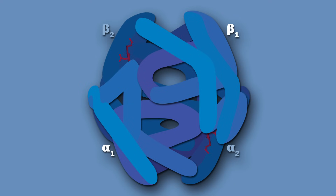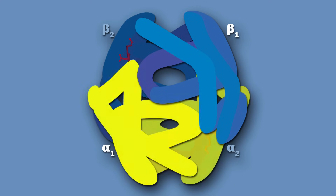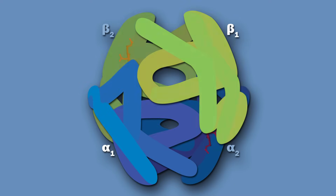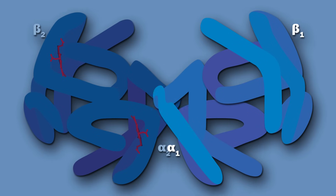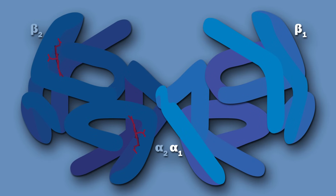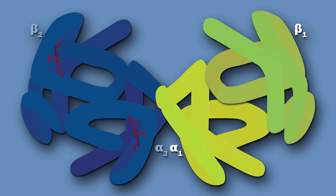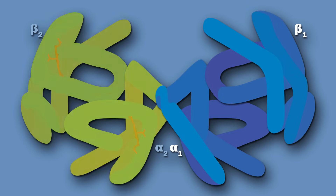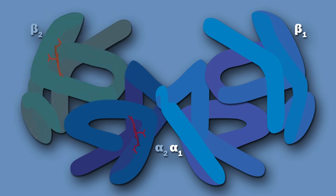In hemoglobin, the four subunits — the two alpha subunits and the two beta subunits — are arranged into two dimeric halves: one alpha1 beta1 subunit pair and one alpha2 beta2 subunit pair. Each of these dimeric halves moves as one rigid body.